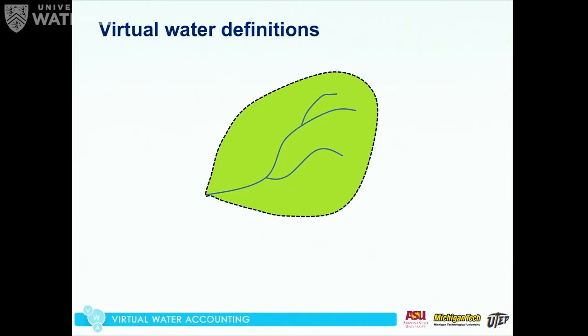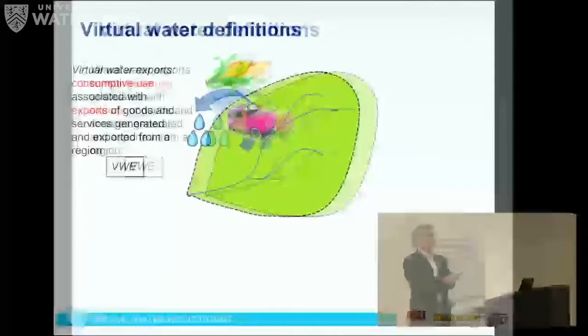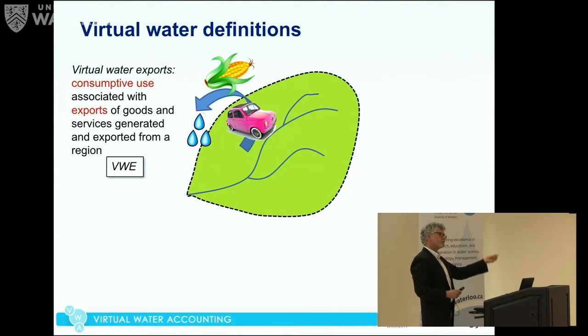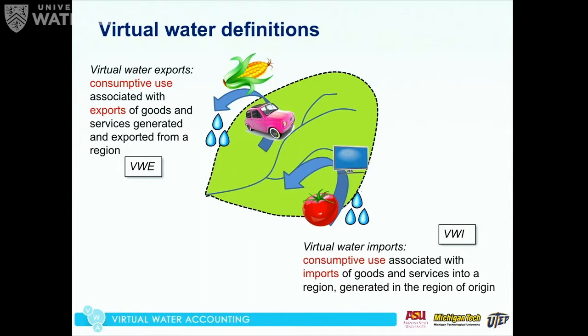Let's make sure we're all on the same page in terms of what we mean by virtual water. First, we define the region over which we're doing our virtual water calculations — say, a watershed. Virtual water exports are the water consumptively used within the basin to make a product, crop, or commodity, which is then exported out of the watershed. We say the water used to produce that is virtually being exported with it. Virtual water imports are the reverse: we import goods and services, and wherever those materials came from, water was used to create them.